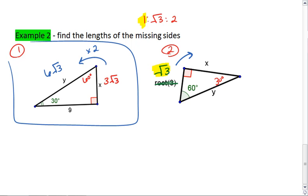To go from the shortest side to the longer side, we want to multiply by the square root of 3. Well, the square root of 3 times the square root of 3 is just 3.